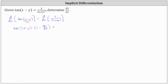On the right, because we have a quotient, we will apply the quotient rule of differentiation. For the denominator of the derivative, we have the square of the original denominator, which is the square of the quantity 5 plus 2x squared. In the numerator, we have the denominator 5 plus 2x squared times the derivative of the numerator with respect to x, which is dy/dx. Then we subtract the numerator y times the derivative of the denominator with respect to x, which is 4x.